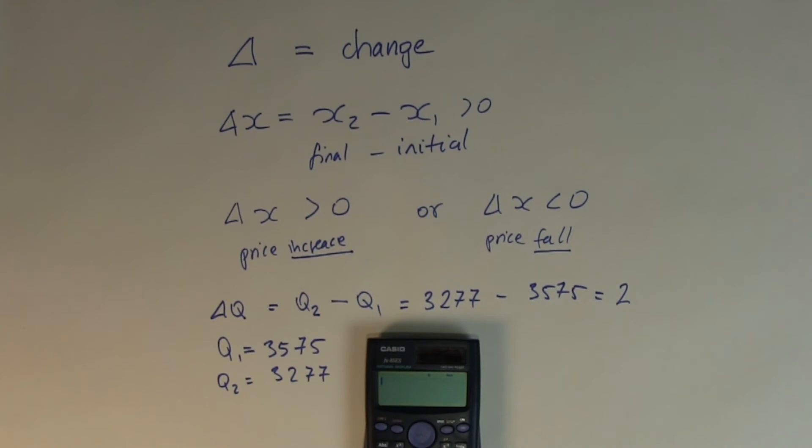Pick up the calculator, 3277 minus 3575 is equal to minus 298.